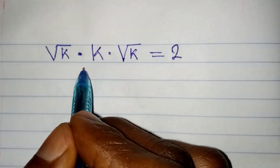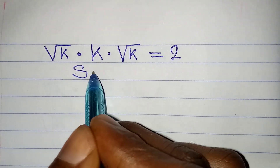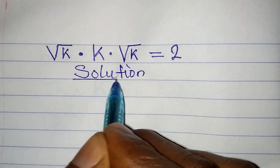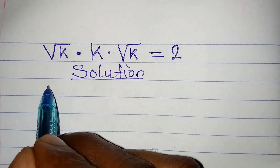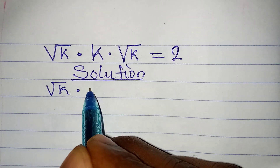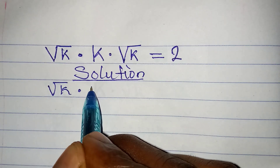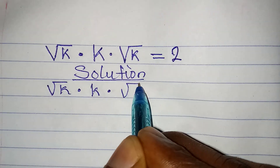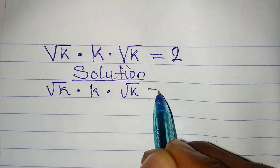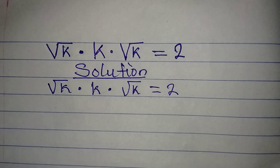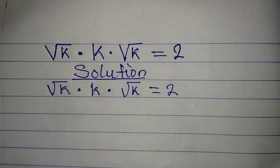Hello everyone, let's solve this problem very quickly. We have square root of k, multiplied by k, multiplied by square root of k, equals 2. We are looking for the value of k.